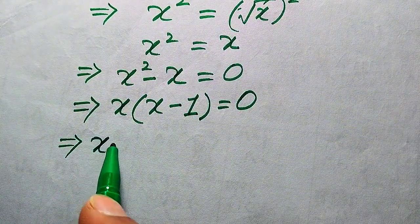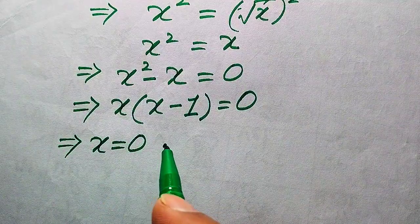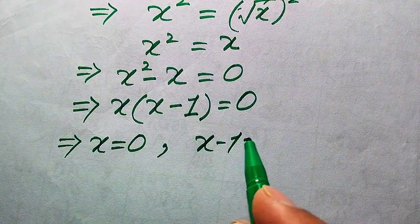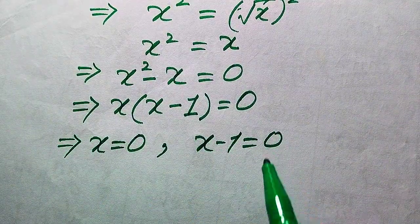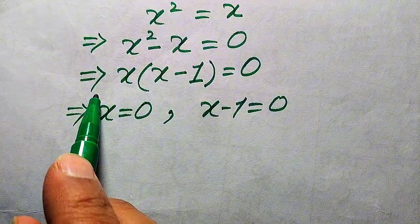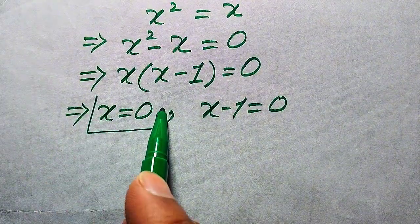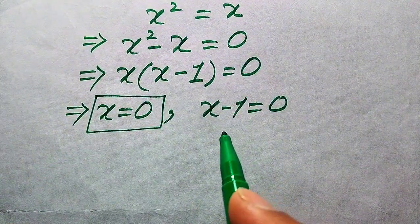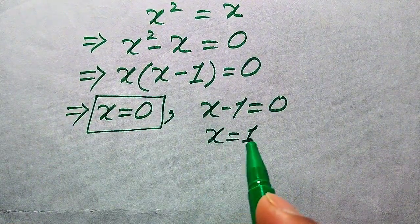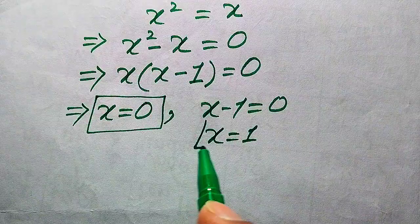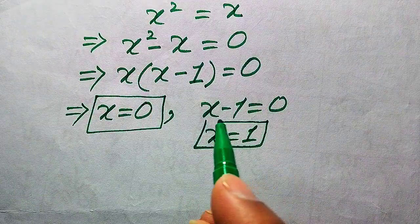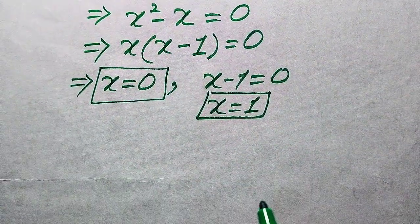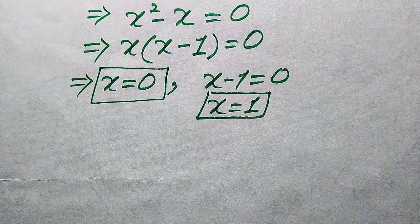We divide this equation into two cases. The first case gives X equals zero, which is the first root. The second case is X minus 1 equals zero, which gives X equals positive 1, and this is the second root of the given equation.